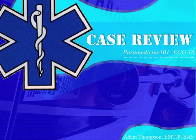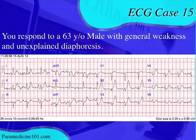Hello and welcome back, this is ECG case number 16. You respond to a 63-year-old male with general weakness and unexplained diaphoresis. Whenever I have anybody with unexplained diaphoresis — not from playing basketball or a panic attack — I think cardiac. That pale, cool, diaphoretic patient tells you they don't feel well: get a 12-lead EKG, because a lot of the time they may be having an MI.